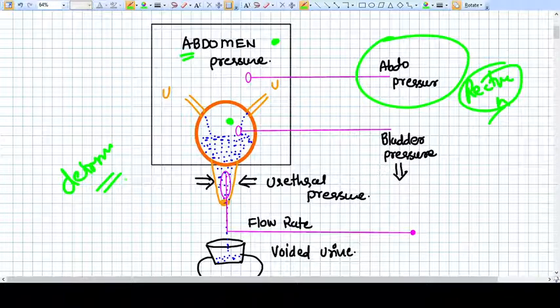Bladder pressure is also called vesicle pressure. So if we want to get the detrusor pressure, we have to subtract abdominal pressure from the bladder pressure. Then we will get specific detrusor pressure. That's why the investigation is called subtracted cystometry.